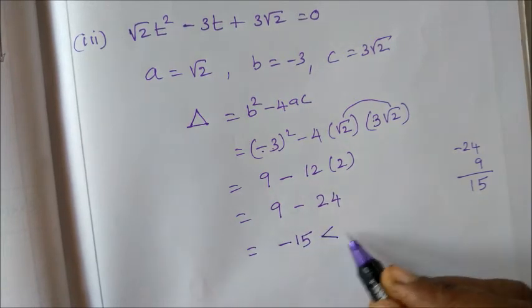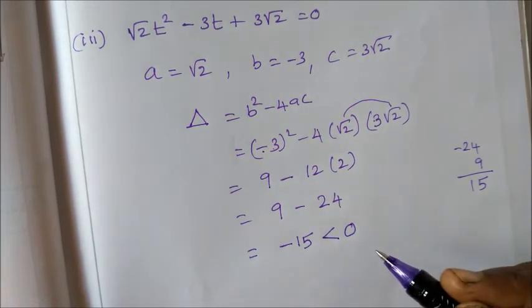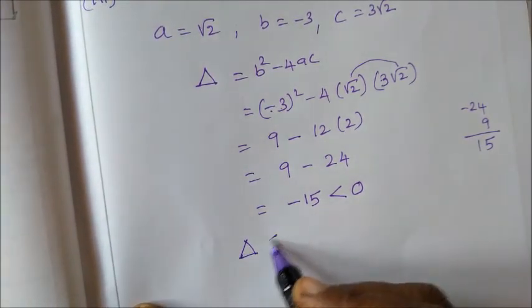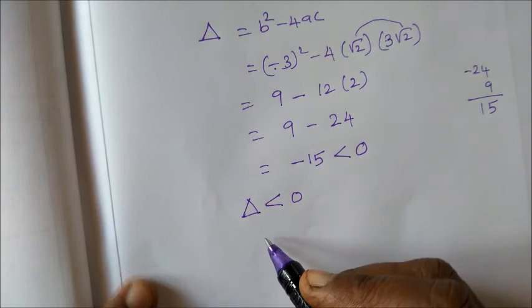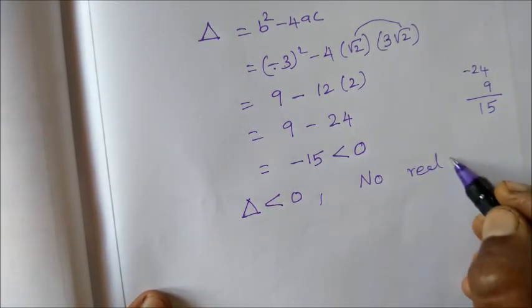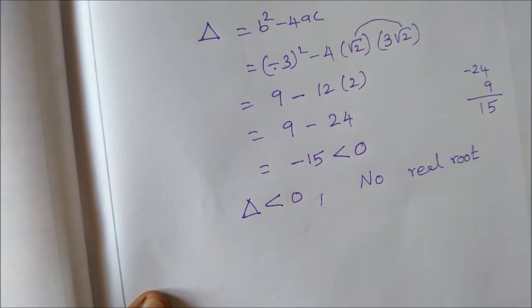So negative is less than 0. Delta is less than 0. Less than 0 means no real root. So no real root. That's all. Thank you.